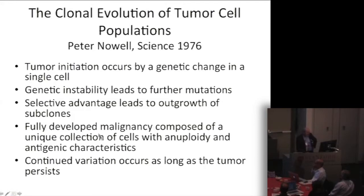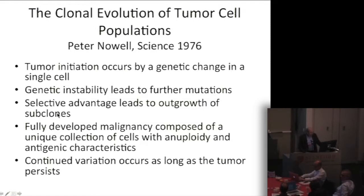At that time, he put forward a number of postulates, some of which were obvious and some of which have held up over time: the tumor is initiated by a genetic change in an original single cell; genetic instability leads to further mutations with selective advantage leading to outgrowth of subclones; the fully developed malignancy is composed of a unique collection of cells with aneuploidy and antigenic characteristics; and continued variation occurs as long as the tumor persists. These are the problems that we can address and enumerate and see what the potential solutions would be.